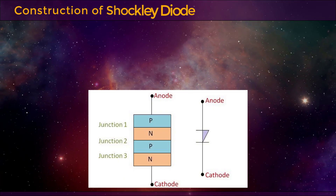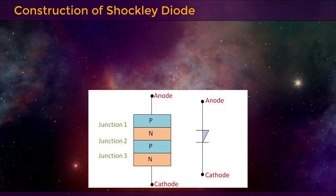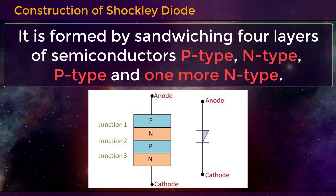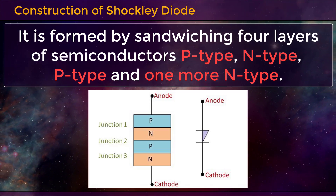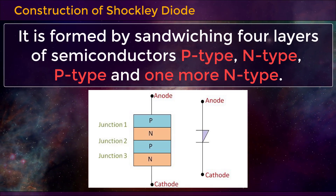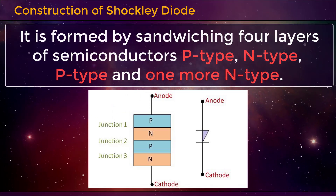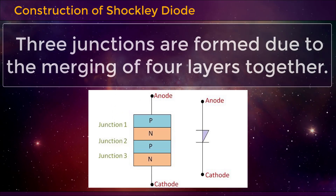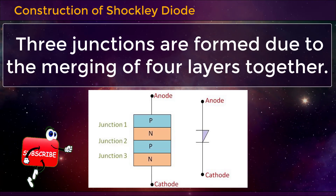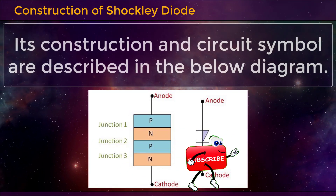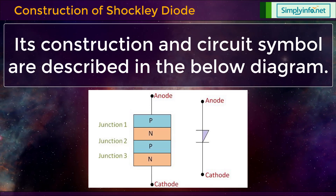Now, let's look into the construction of Shockley Diode. It is formed by sandwiching four layers of semiconductors: P-type, N-type, P-type, and one more N-type. Three junctions are formed due to the merging of these four layers together. Its construction and circuit symbols are described in the diagram.